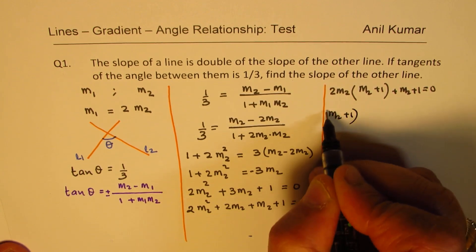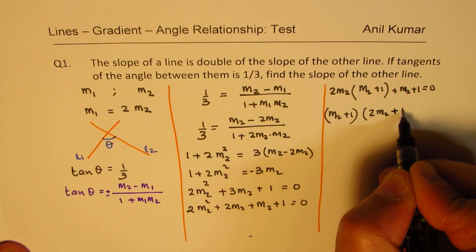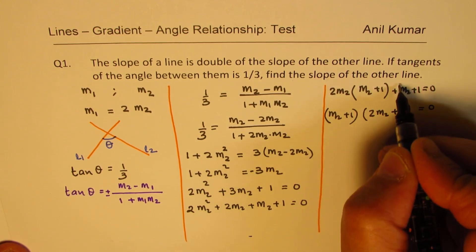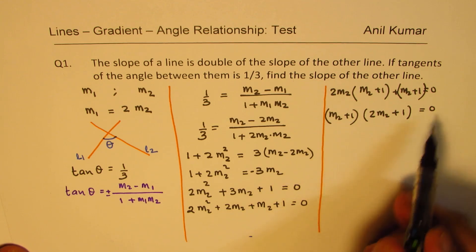Now, m2 plus 1 is common. So, we get 2 m2 plus 1 equals to 0. Think as if this is in a bracket.